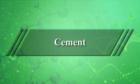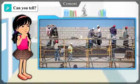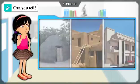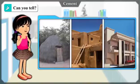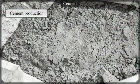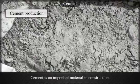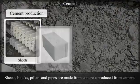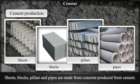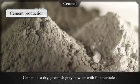Cement. Can you tell? What are the materials used for construction? Which of the houses seen in the pictures here have a strong structure, and why? Cement is an important material in construction. Sheets, blocks, pillars, and pipes are made from concrete produced from cement. Cement is a dry, greenish-gray powder with fine particles.